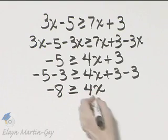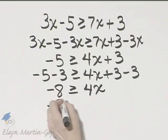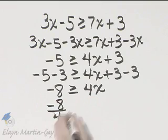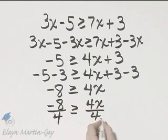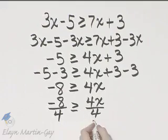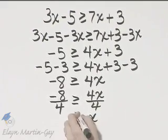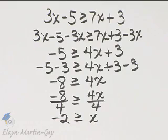I'll finish solving by dividing both sides by the coefficient of x. The left side I'll divide by 4, the right side I'll divide by 4. I'm dividing by a positive number so I do not change the direction of the arrow. And I have x, here I have my greater than or equal to sign, here I have negative 2.